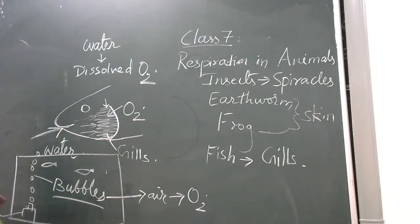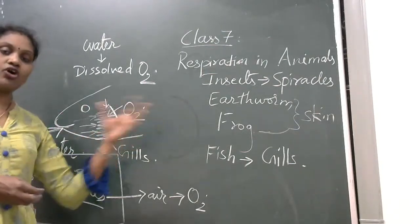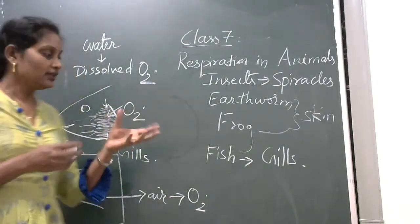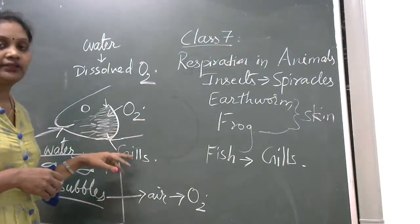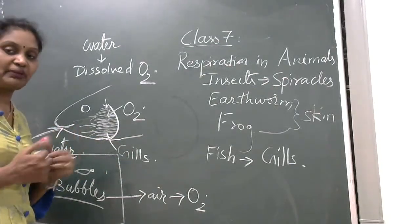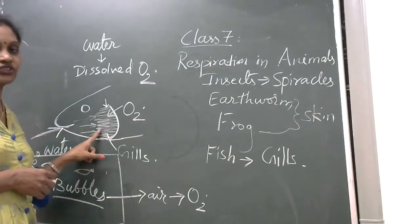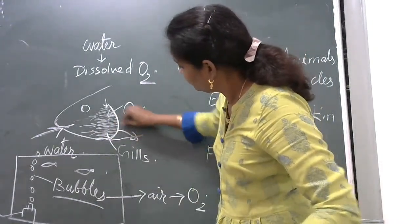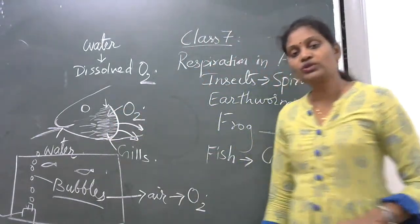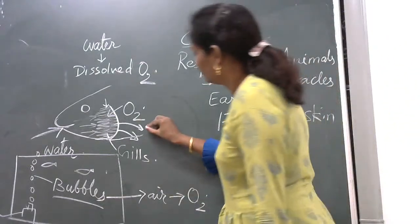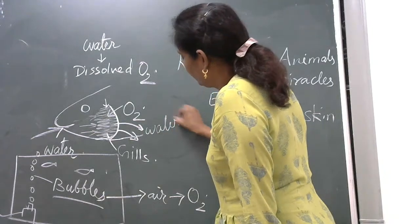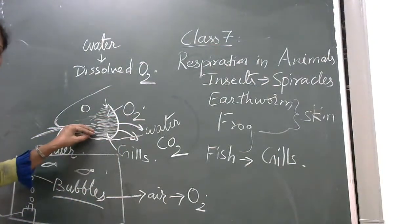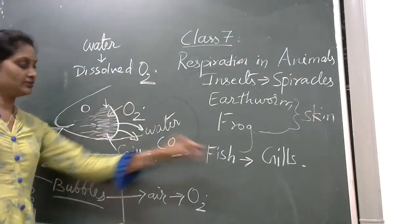Now, have you understood? That is the reason why all the time we think that fishes are eating something — no, they are not eating. They gulp the water, and through the water they take the oxygen. They are pumping the water, and the water here reaches the gills and the gills absorb the oxygen. Water with carbon dioxide is given out. So oxygen is absorbed, and water with carbon dioxide is given out.